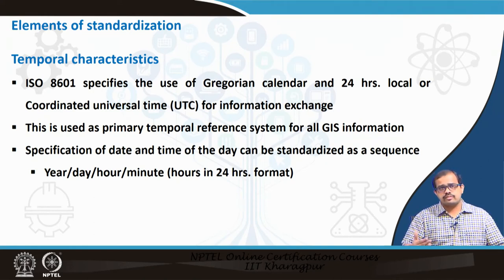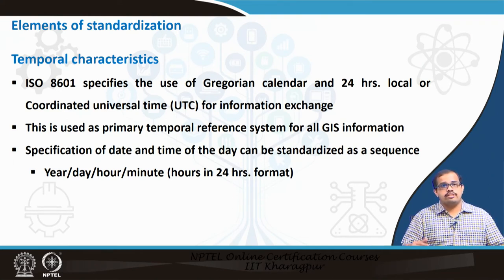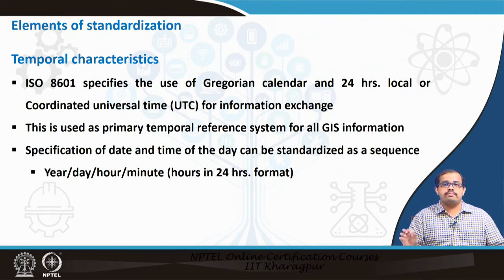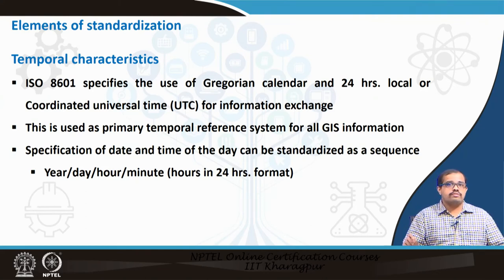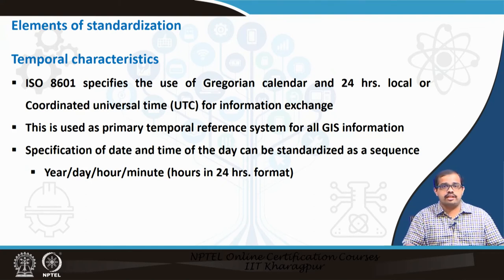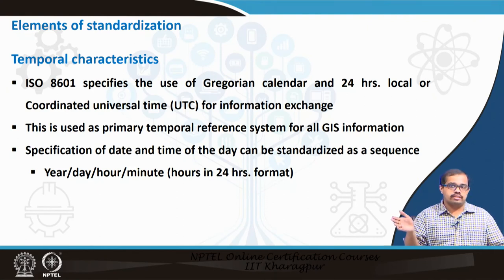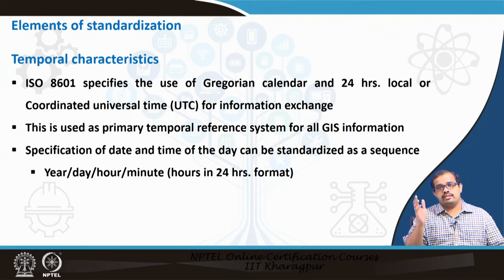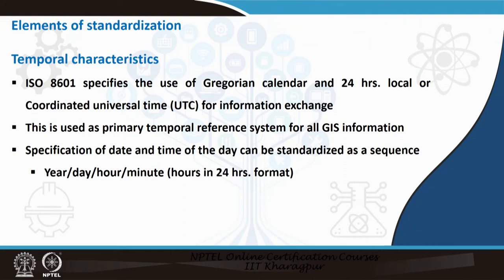For temporal characteristics, we refer to ISO 8601 which specifies the use of a particular calendar and a 24-hour local or coordinated universal time for information exchange. This is the primary temporal reference system for all GIS information systems. You are supposed to use Coordinated Universal Time (UTC) for any temporal characteristics. The specification of date and time can be standardized as a sequence of year, day, hour, and minute — in 24-hour format, not the regular date/month/year style.